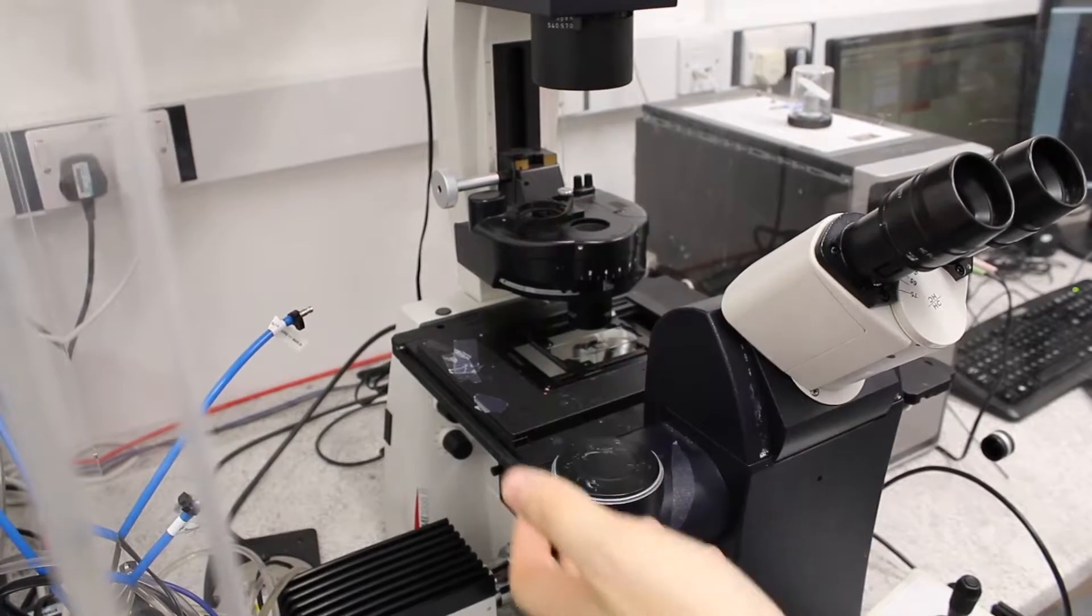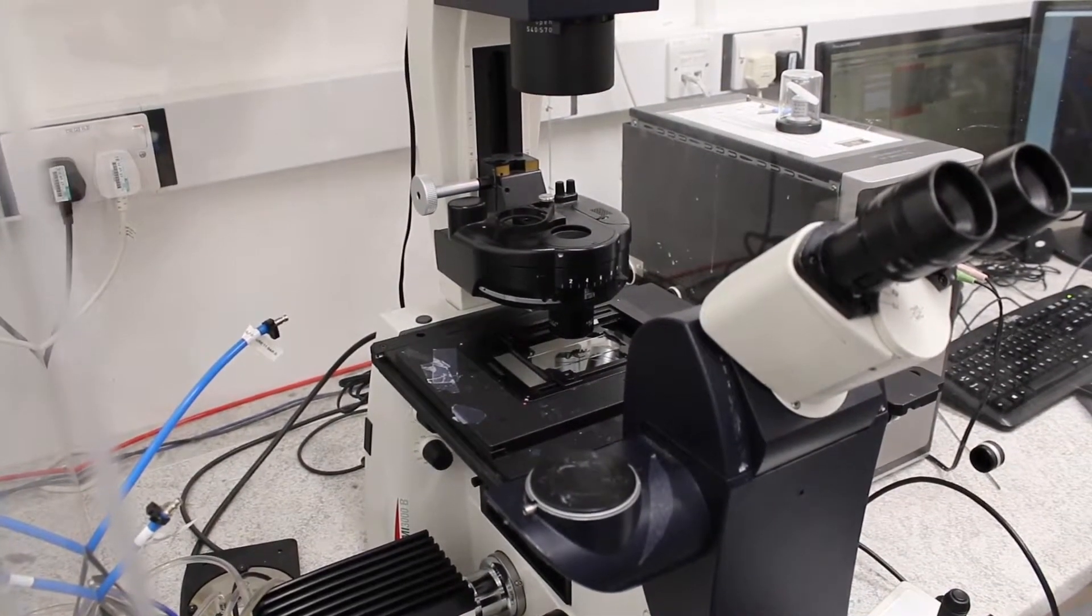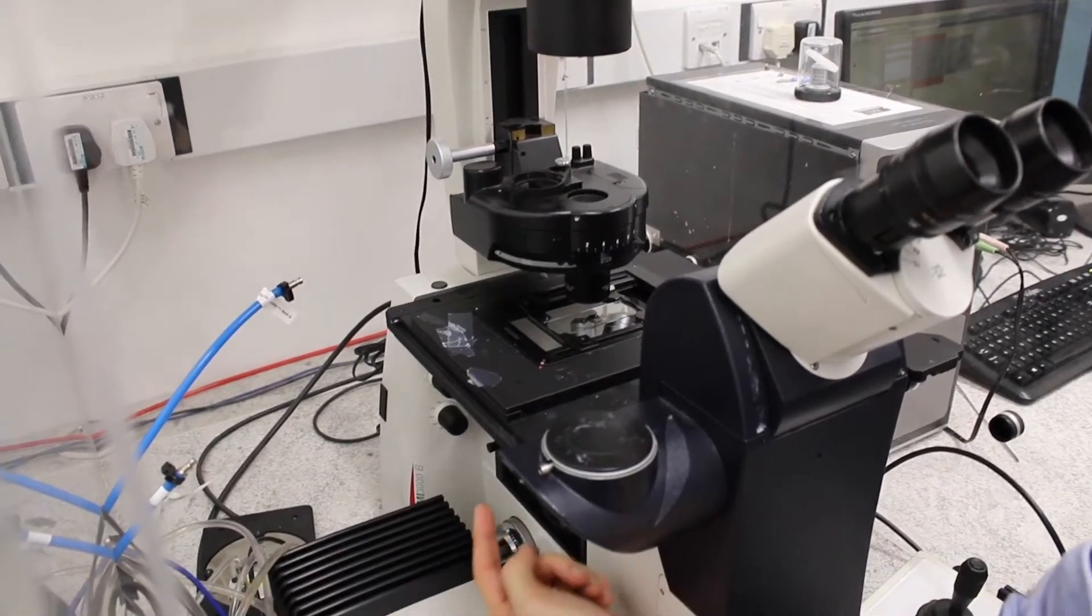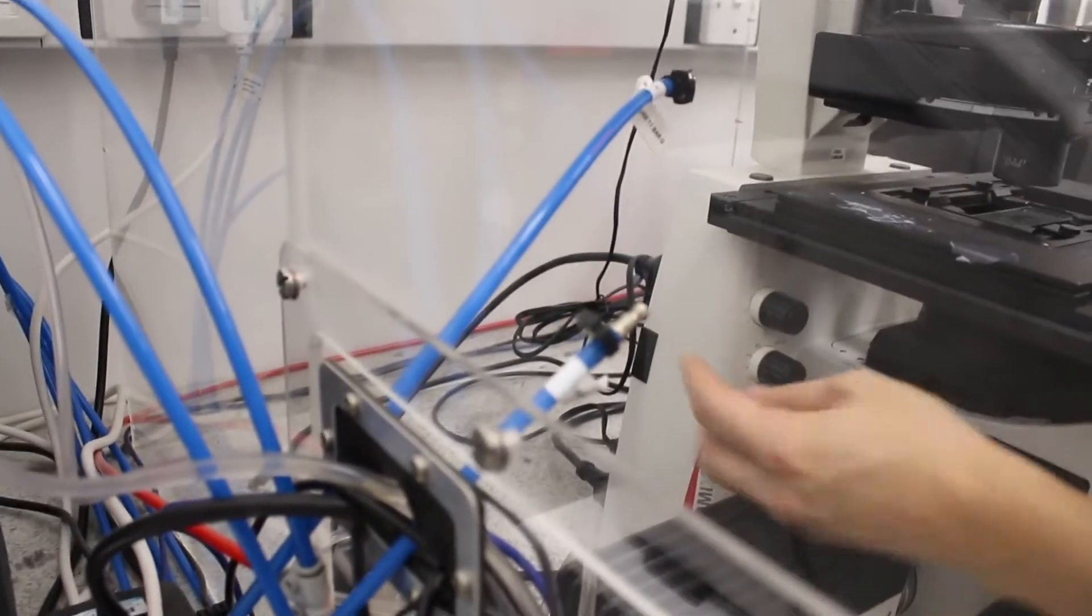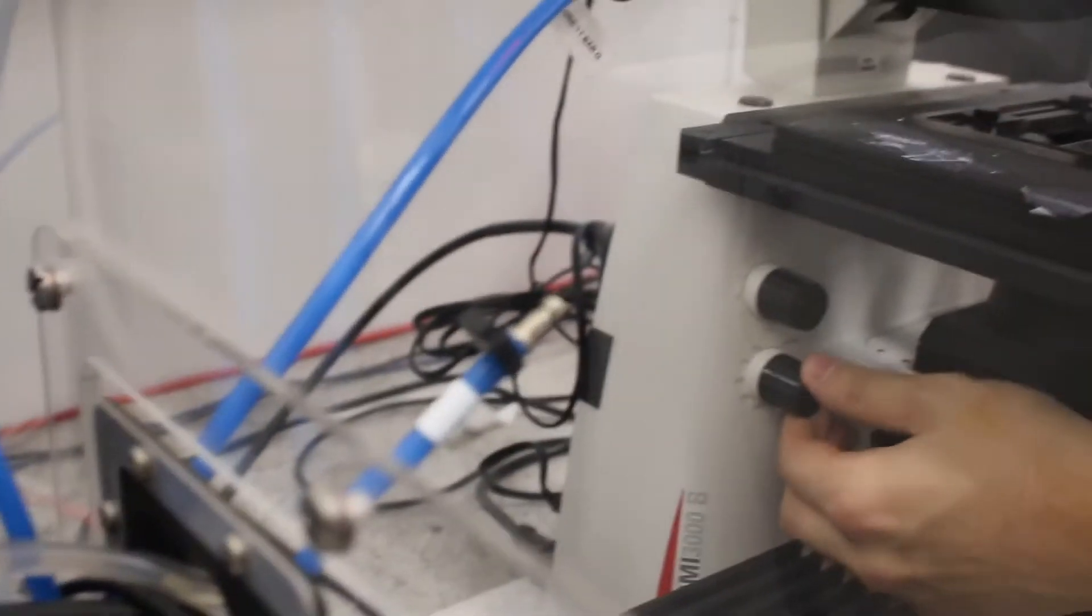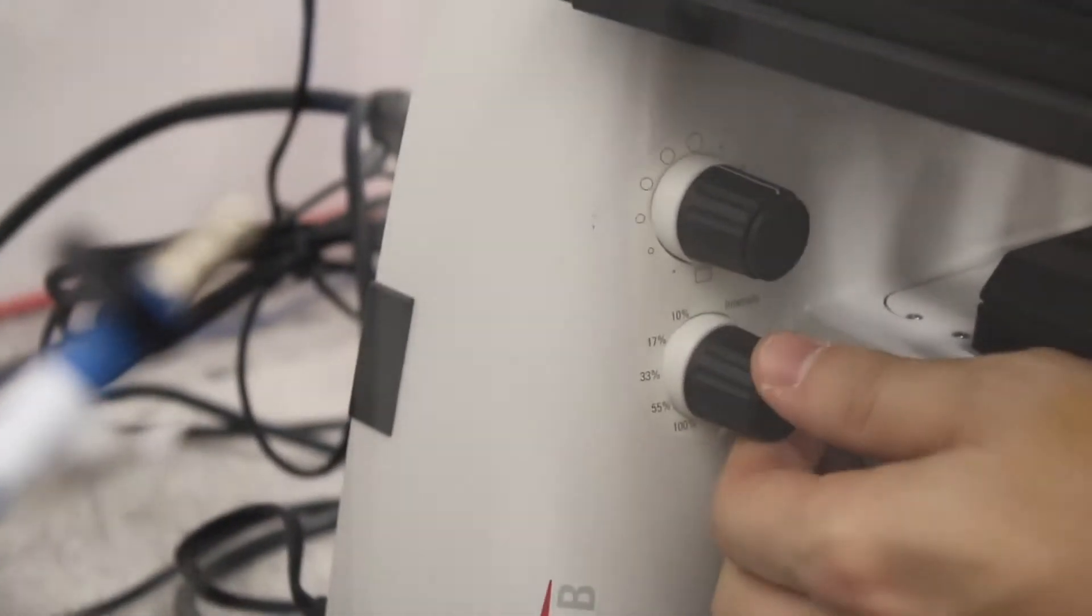And then again you would have to focus in your sample and on the software change the settings so that you can see nicely your sample. You can adjust again the intensity, not just using the intensity on the fluorescence lamp, but by using this wheel here you will get either 100% of the intensity or only 55,